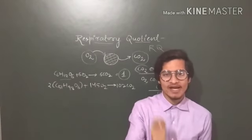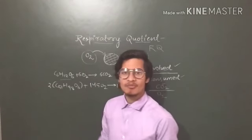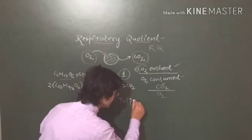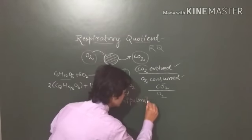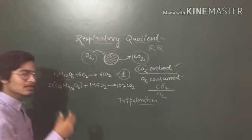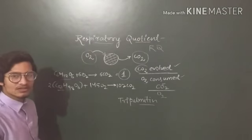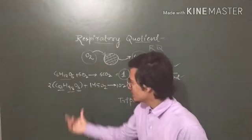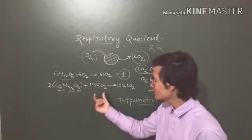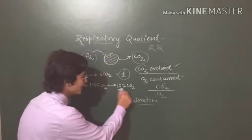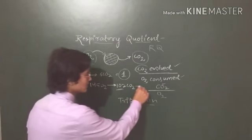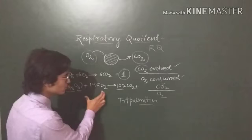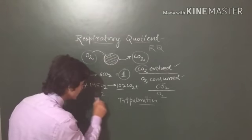Now let's take an example of a fat. The fat is tripalmitin. You've heard about palmitic acid, so from that is derived tripalmitin. Tripalmitin is a fat with formula C51H98O6. This is just an example. This tripalmitin reacts with 145 oxygen to give 102 CO2 plus 98 H2O and energy.